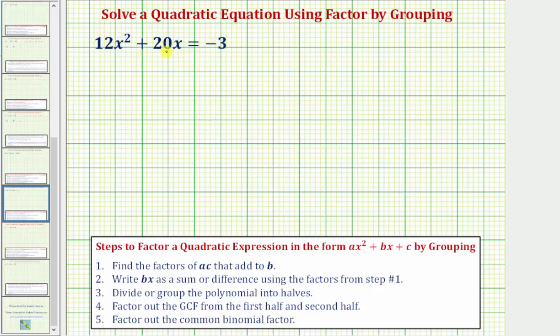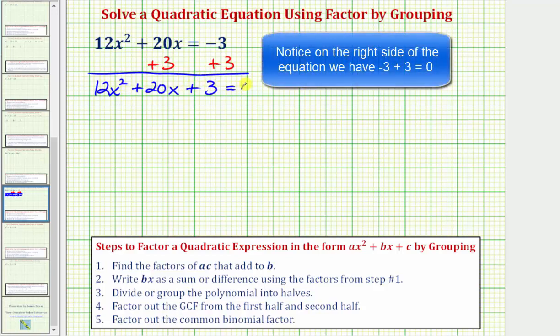We first want to set this equation equal to zero. So let's add three to both sides of the equation. This gives us the equation 12x squared plus 20x plus three equals zero.